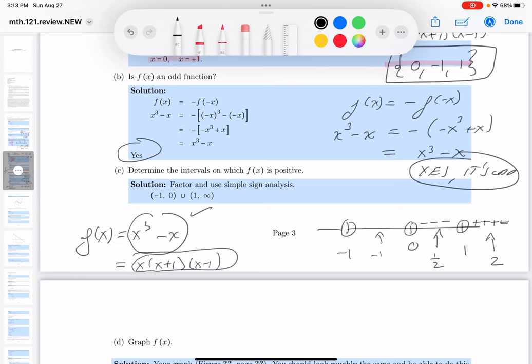Take a test point over here. Minus one half. And if you plug that in, again, I would say plugging into the factor form is easier. You get negative, positive, negative, which would be positive overall. And a test point over here, like minus two, what would you get there? You're going to get a negative number. You plug it in here or there, you're going to get a negative number.